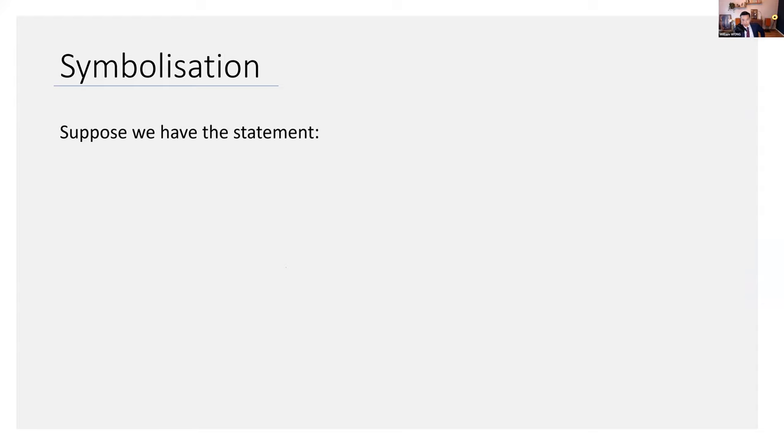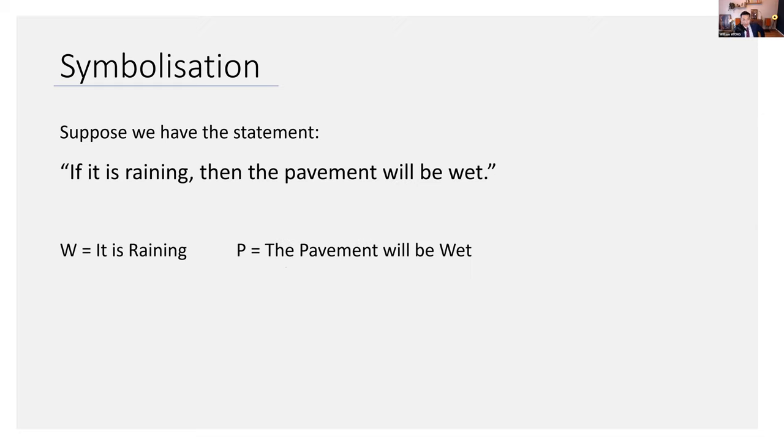We do want to symbolize things. Let's proceed by example. That's often the best way to do it. Suppose we have the statement, if it is raining, then the pavement will be wet. We need a symbolization scheme here. This is what we call the scheme. W is it is raining, and P is the pavement will be wet.